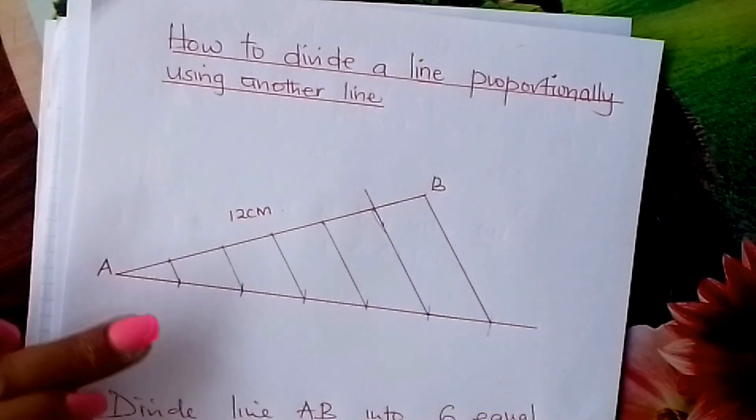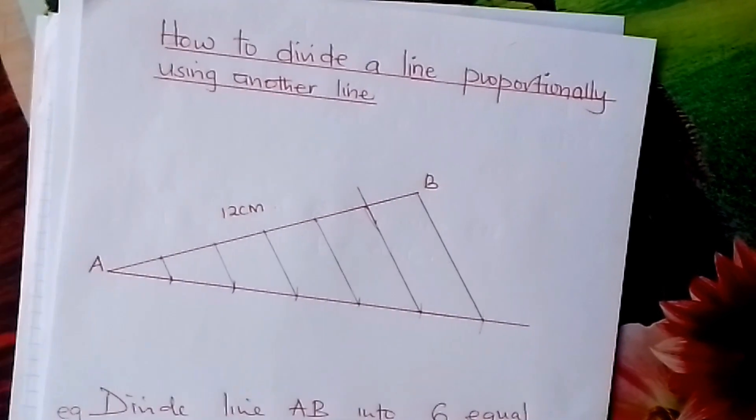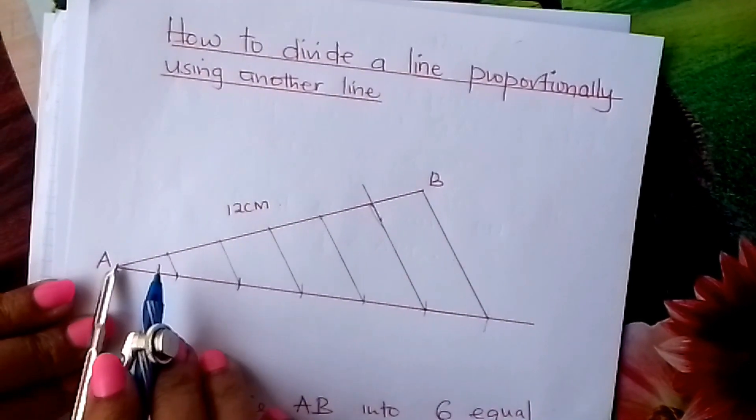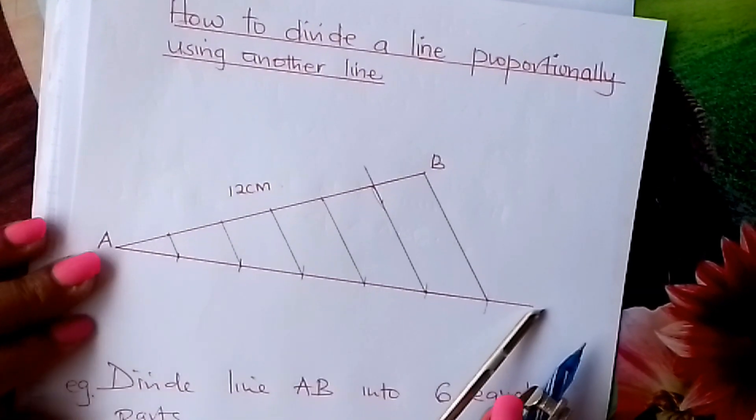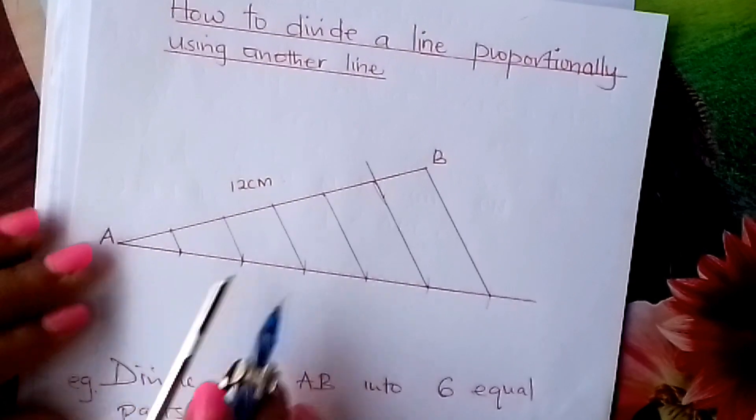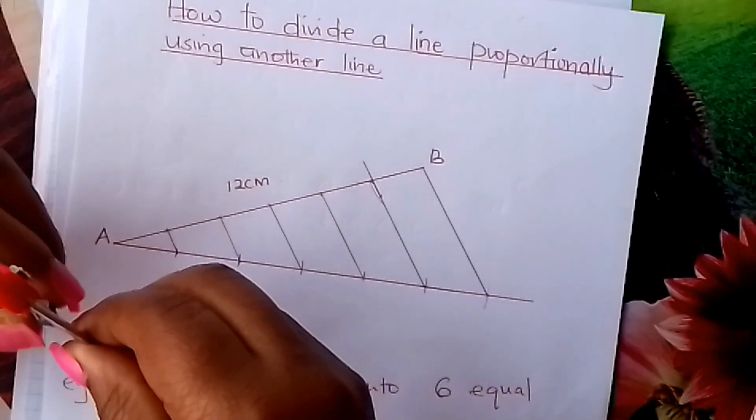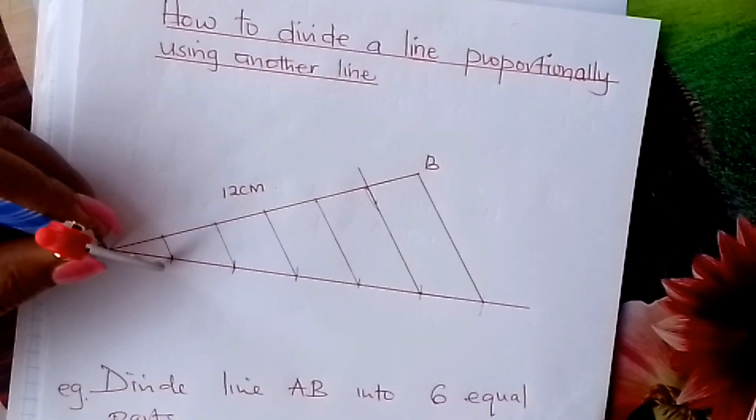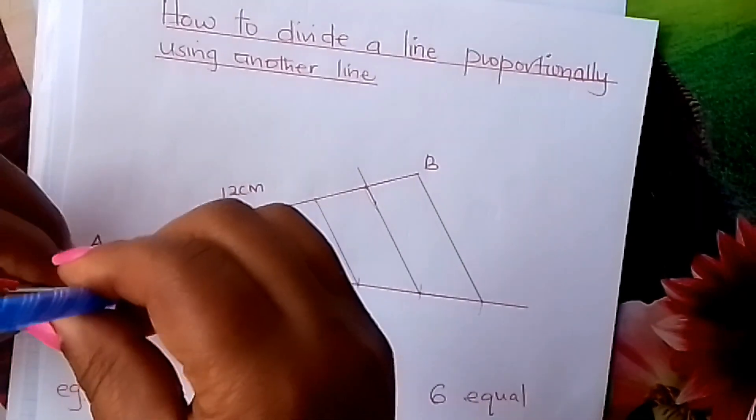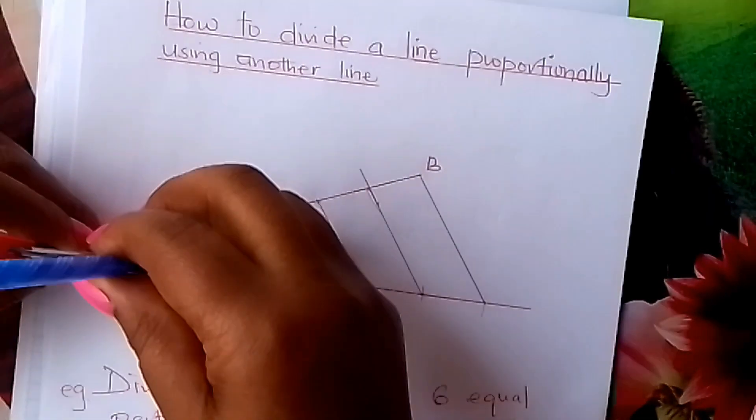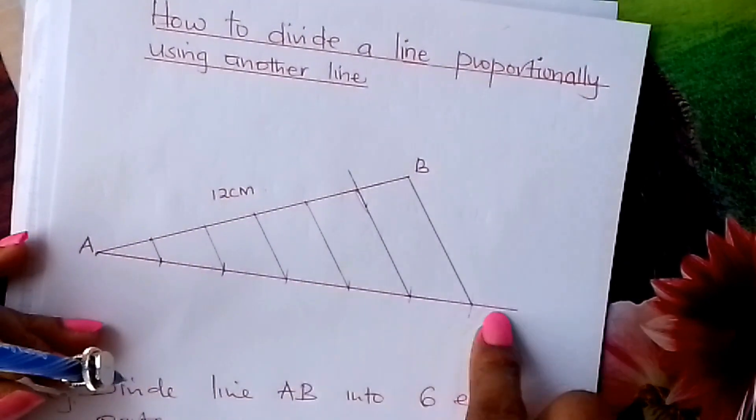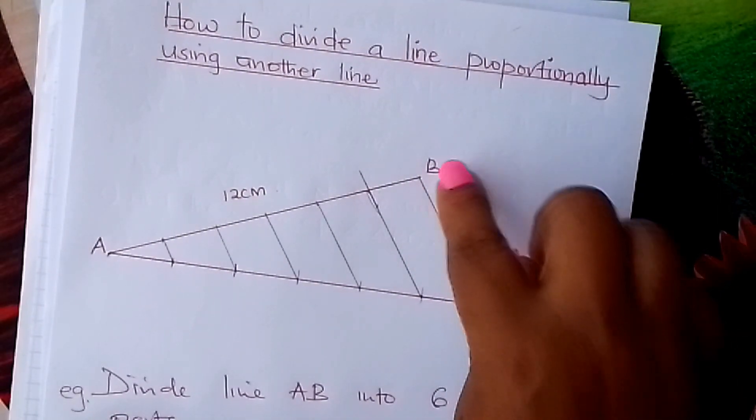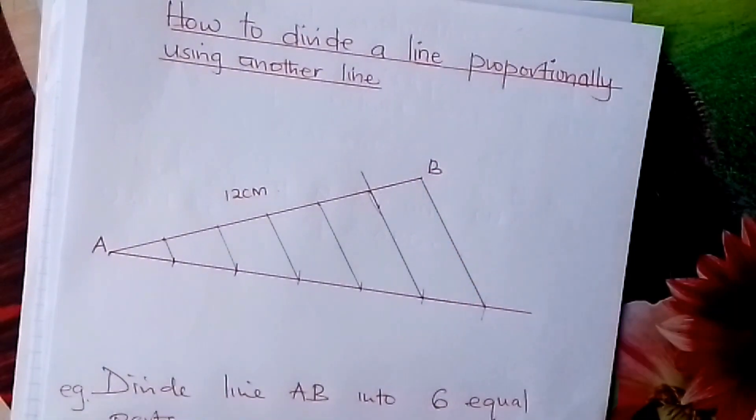So, learner, that is how we divide a line proportionally. You have this line, you come and draw this other line here. Now, divide this into six equal parts with your compass. Use any radius. Go and make six equal parts on this line. After making it, join this line to point B from there. Do like this.